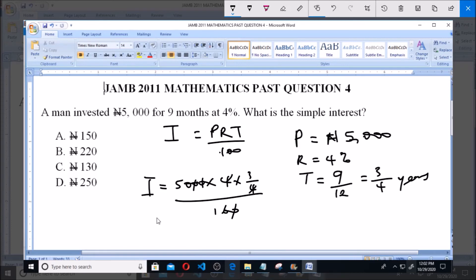So the simple interest I equals 50 times 3, and that equals 150. So the simple interest I is equals to 150 naira.